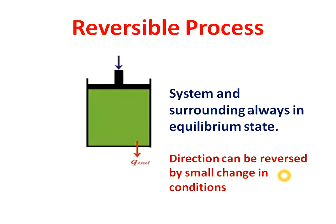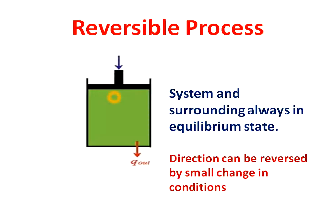Now we will see reversible process with a simple example. Suppose this is a cylinder and this is a piston. Inside this piston and cylinder, there is a gas. We are applying a very small amount of pressure on this piston. This piston and cylinder are frictionless — there is no friction between the walls of the piston and cylinder, so there is no loss of energy due to friction. We are keeping some grains of sand on this piston, and those grains apply small pressure on the gas. Due to this small pressure, the gas compresses in a very small quantity, and due to small compression, there is a very small rise in temperature of the gas.